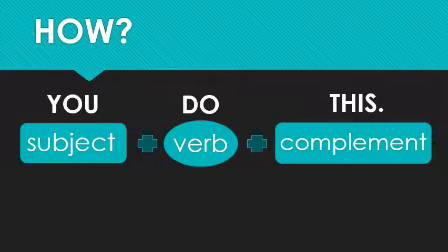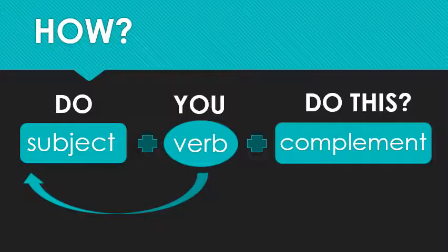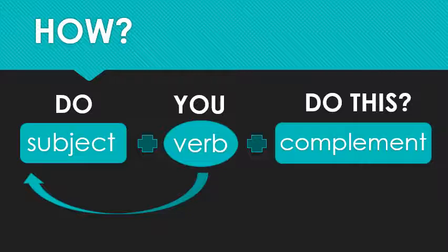We've got the statement 'you do this.' First, we remember to put in that invisible do and switch our subject and verb. So now we've got a question: 'Do you do this?' Keep in mind the invisible do — the question do — is a grammatical do, and that's different from the semantic do, the do that has meaning. The semantic do means action, something is being created or changed. The grammatical do just helps our sentence structure; it doesn't add meaning. Don't get confused by the two do's.